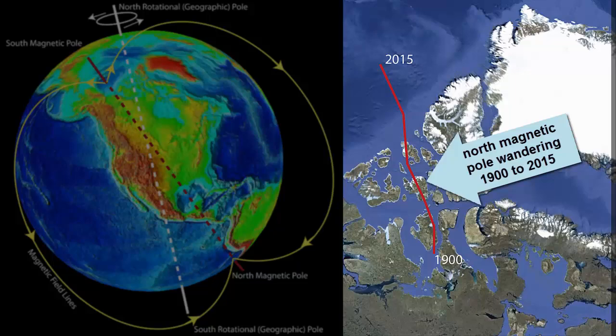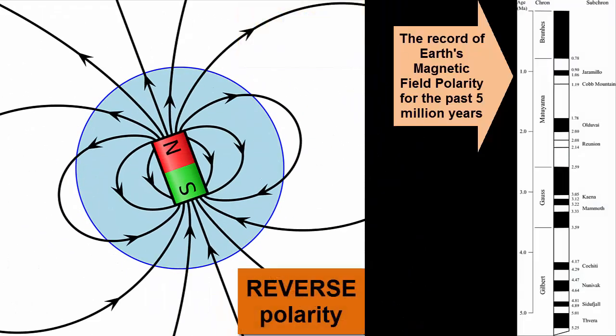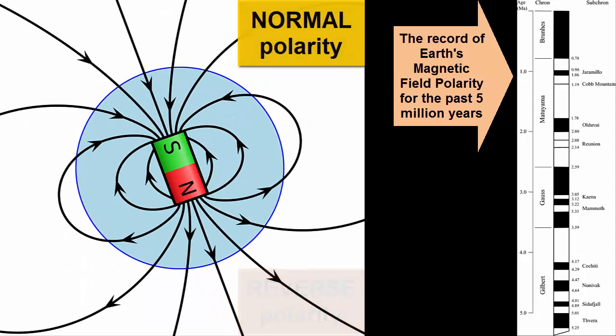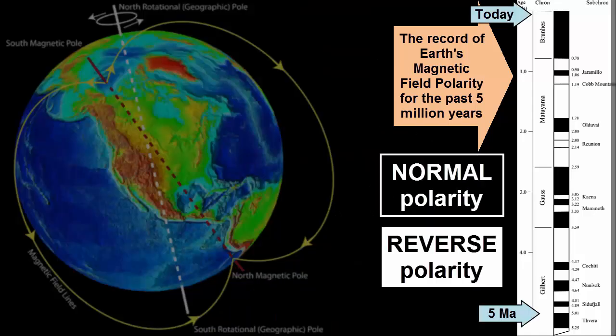As mentioned, the north pole migrates, but so too do the poles switch or reverse. How often? Every couple hundred thousand years or so. Can we predict it? Is there a pattern? This image shows the changes in Earth's magnetic field over the past five million years. Do you see a pattern?